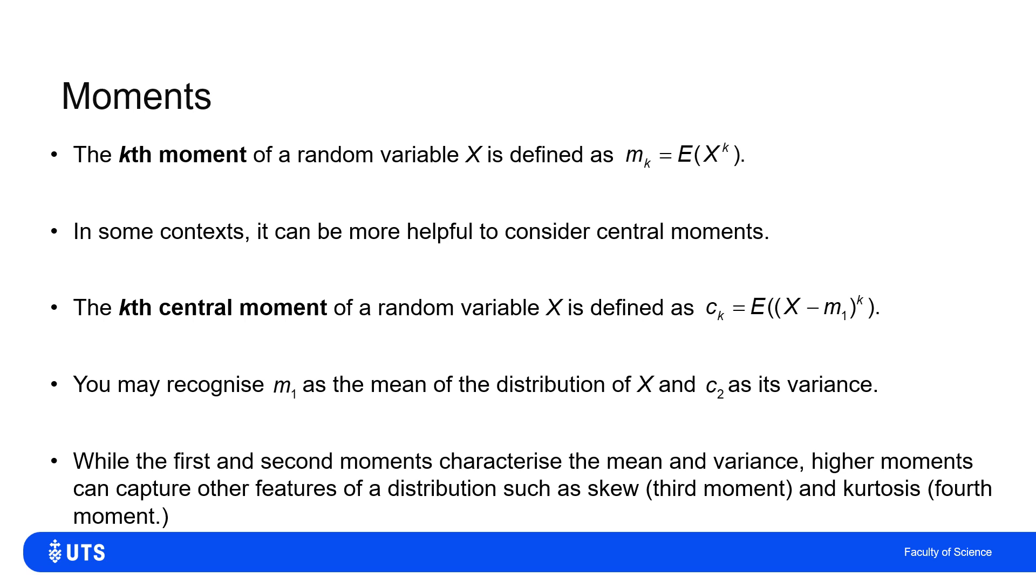Now, you can do higher ones than that. We will tend only to need to work with things like means and variances. But higher moments do capture skewness in a distribution, or kurtosis, which is how heavy or thin the tails of a distribution are. In theory, I can keep gathering any moments as long as they exist. We'll tend only to see first and second moments, but not exclusively.